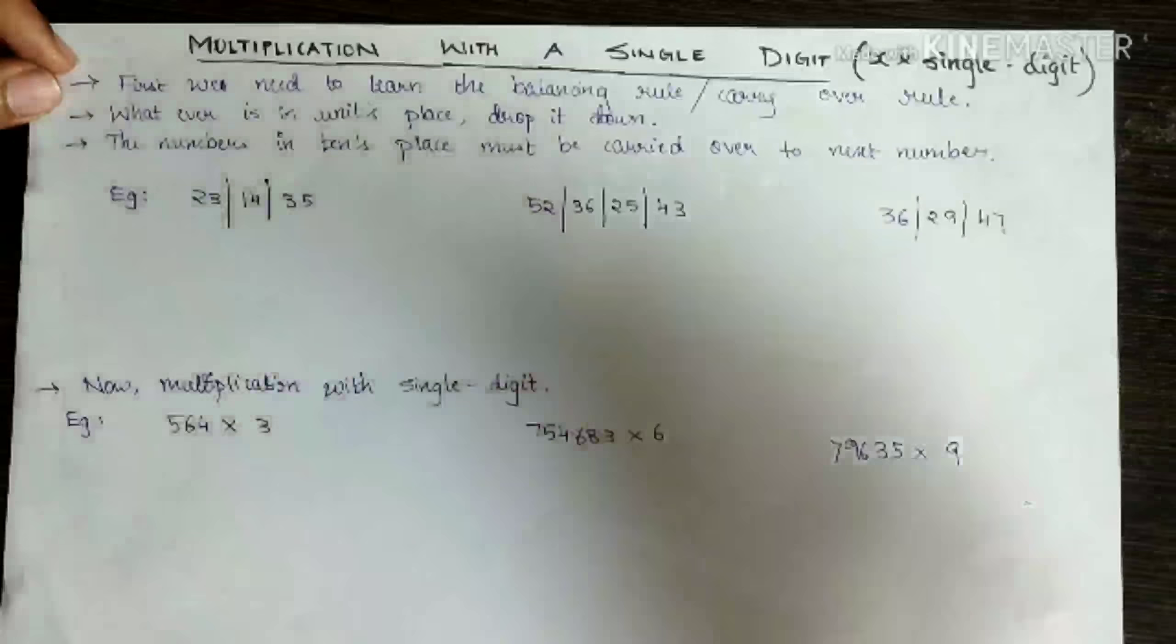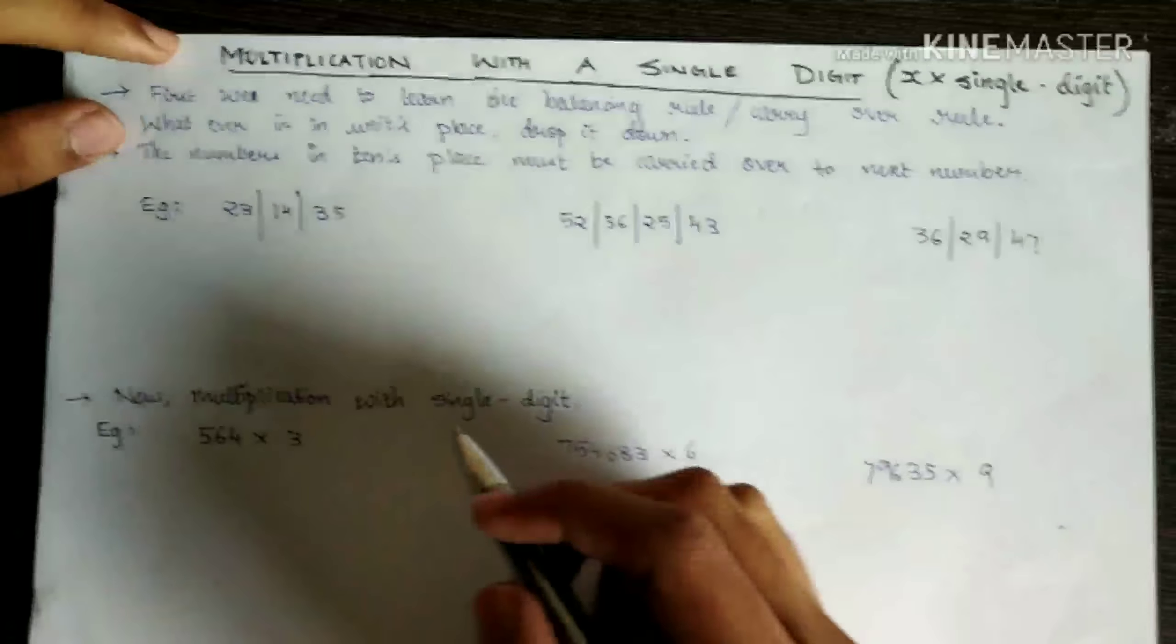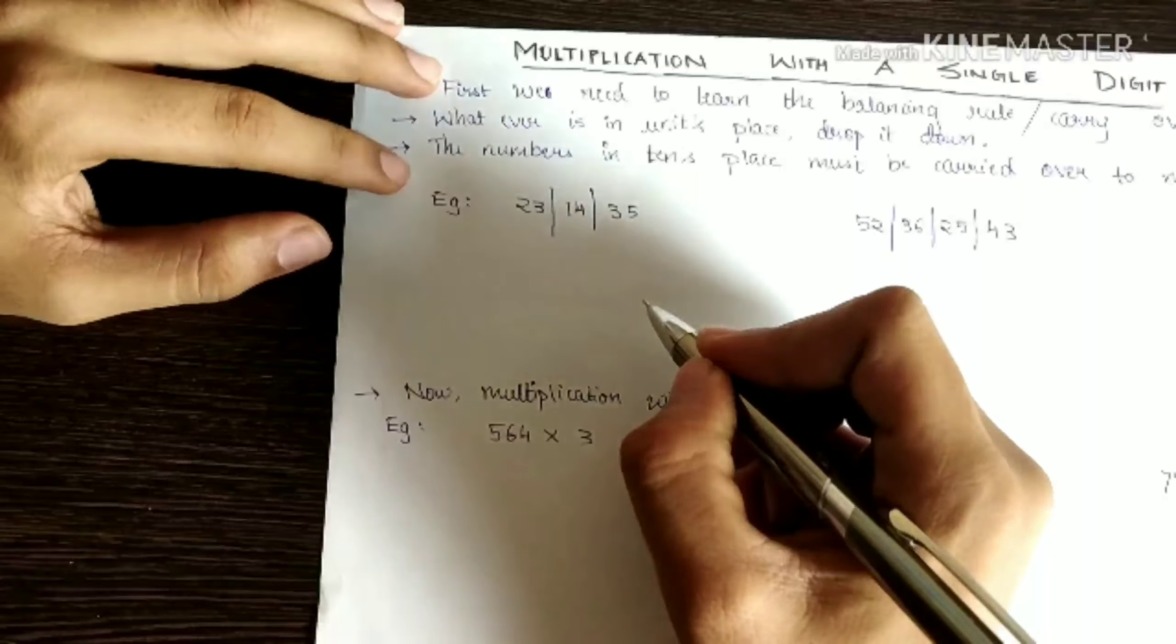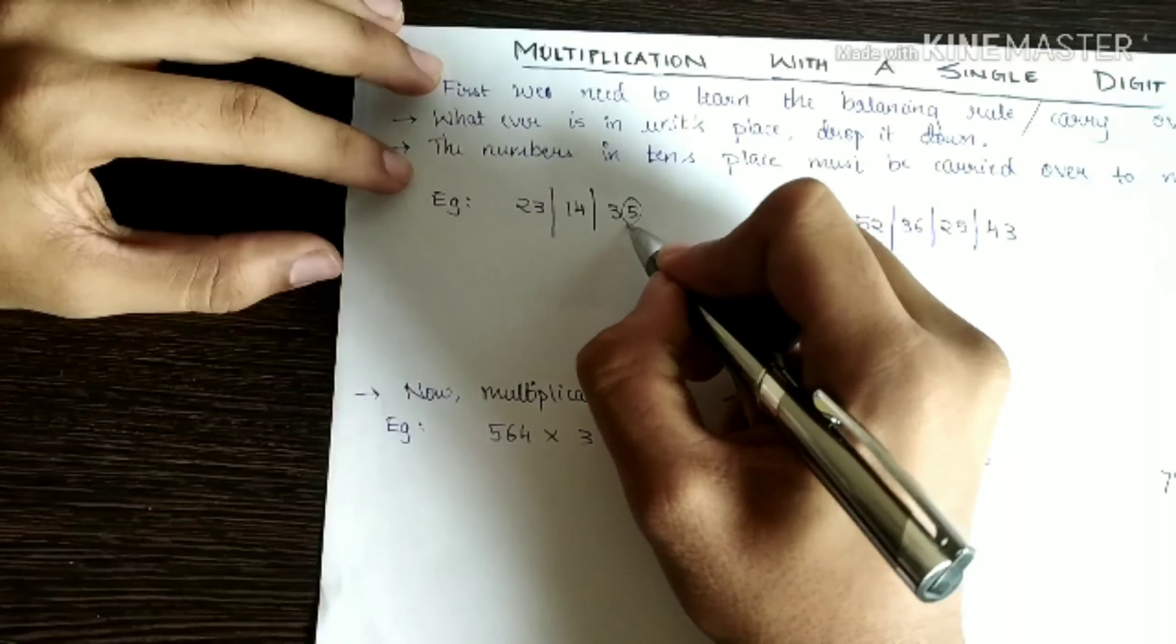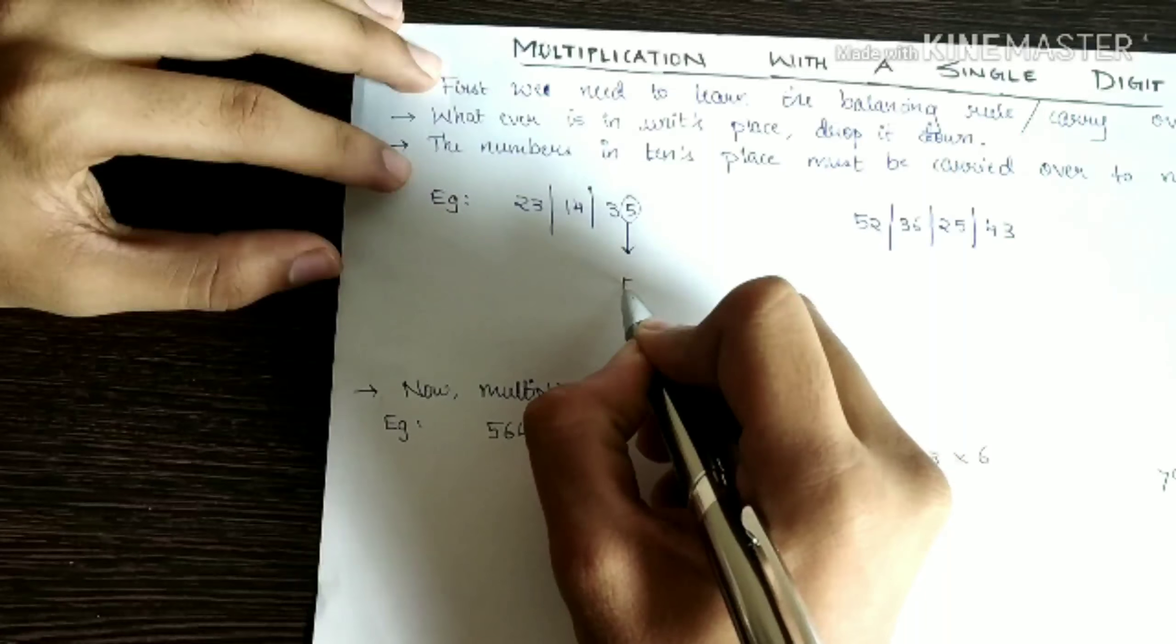For that I have taken three examples to get comfortable with that rule. Now this is units place. Five, they say to drop it down. Let me drop it down.